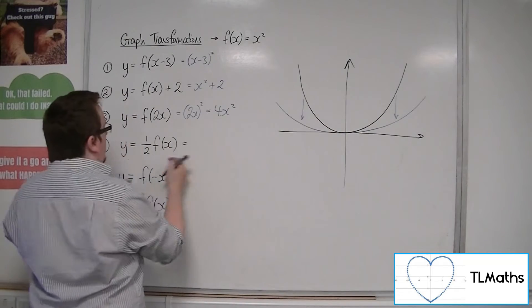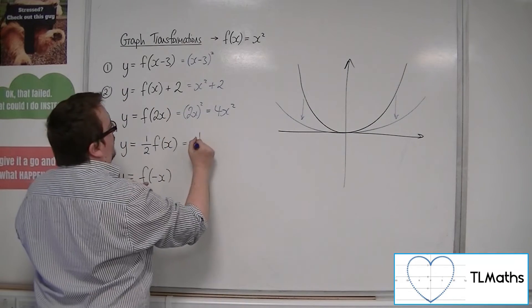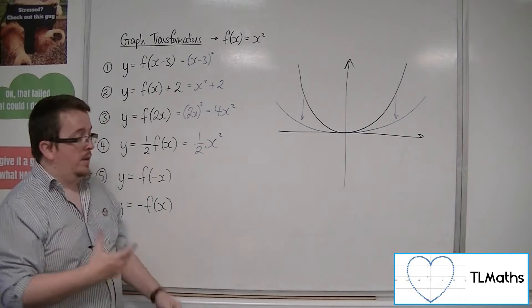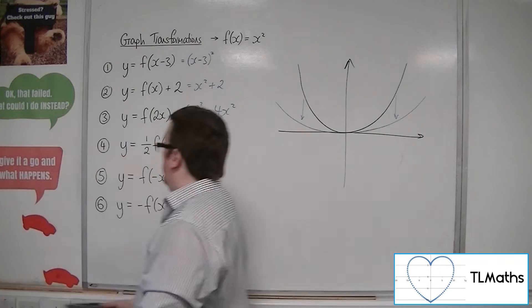So if I'm sticking a half outside f of x, this is a half x squared. So that's that one, that's number 4.